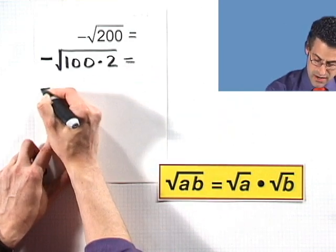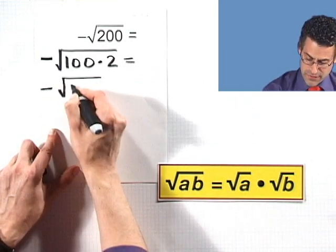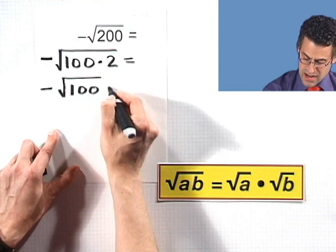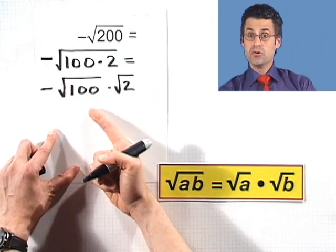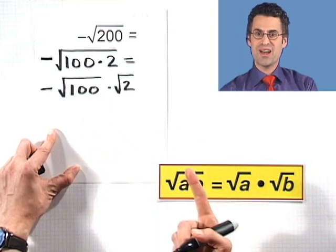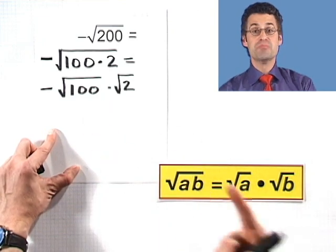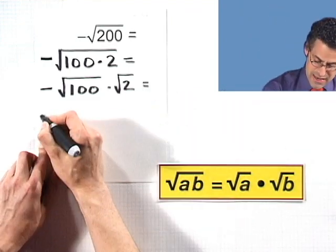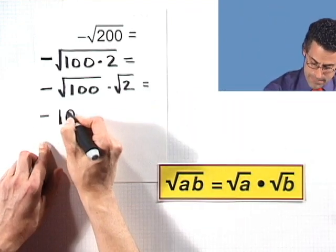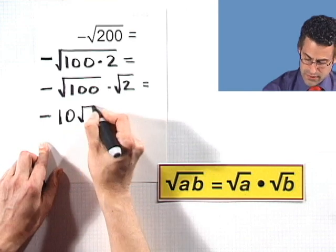So that's going to equal negative sign, square root of the first number times the square root of the second number. But the square root of 100, we can actually figure out. That's just 10, because 10 squared is 100.